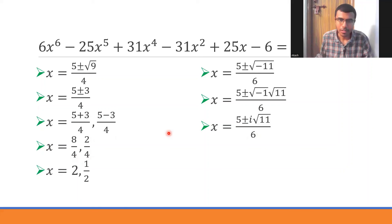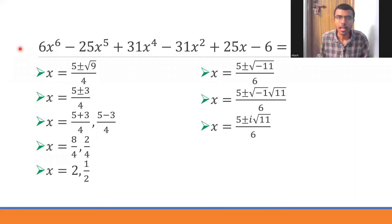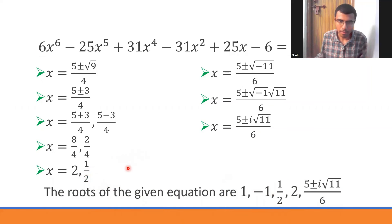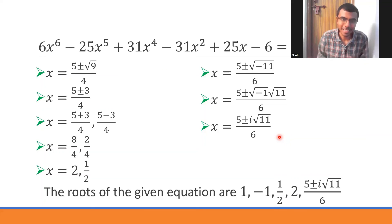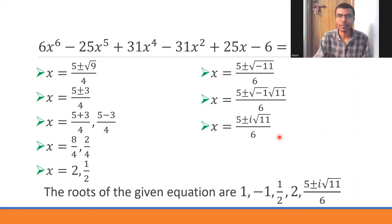All six roots are: x = 1, x = -1 (from the factors x-1 and x+1 identified at the start), x = 2, x = 1/2 (from the first quadratic), and x = (5 ± i√11)/6 (from the second quadratic). I've made many more questions related to theory of equations — check the playlist link in the description. If you liked this video, please hit the like button and subscribe to the channel. Thank you very much!